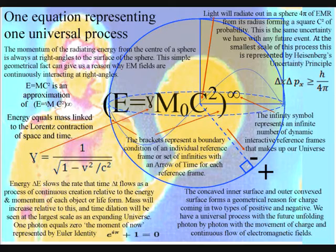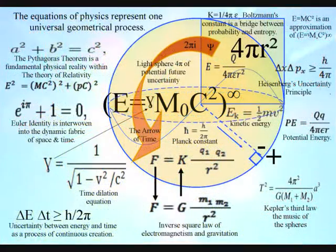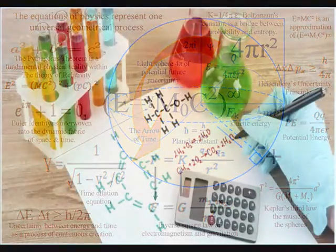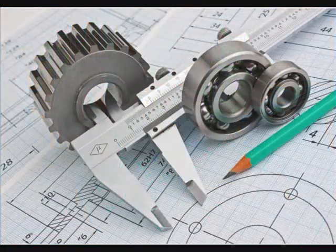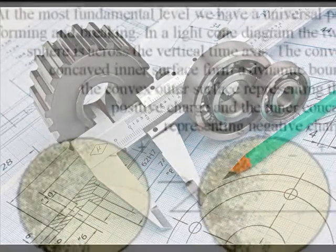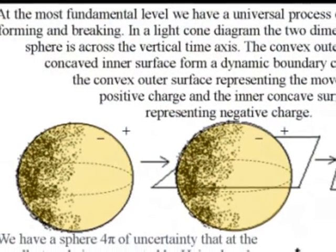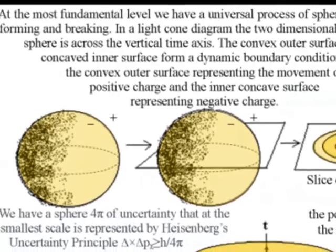The geometry of this process forms the unity of physics and mathematics, with the flow of time being a fundamental feature of our everyday life within physical chemistry, engineering and biology. Because positive and negative charge is forming a two-dimensional dynamic boundary condition.